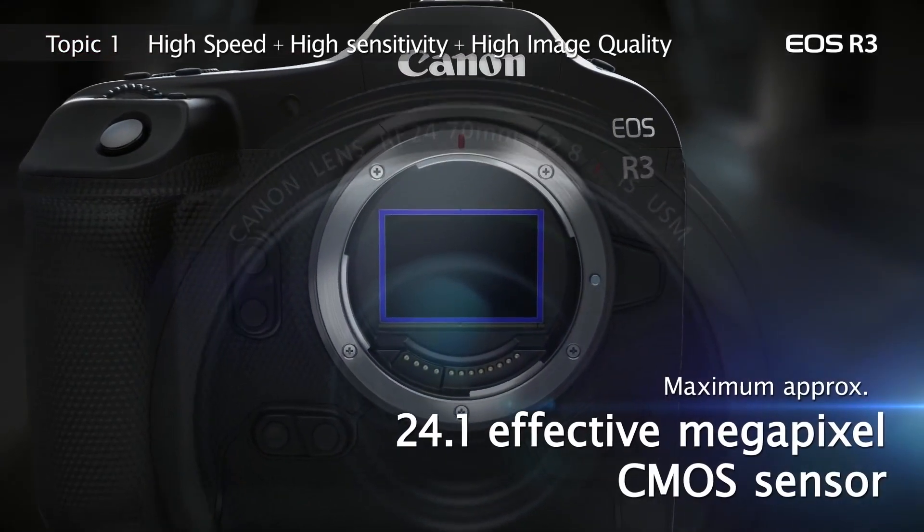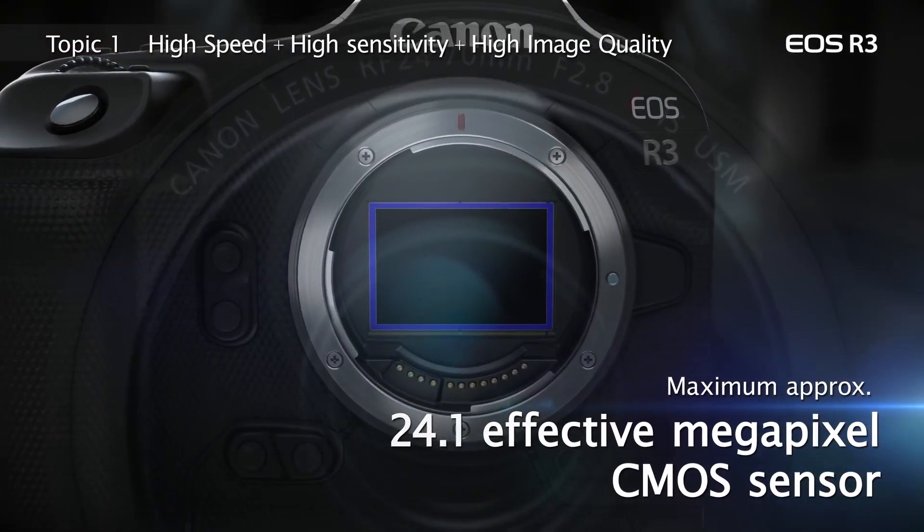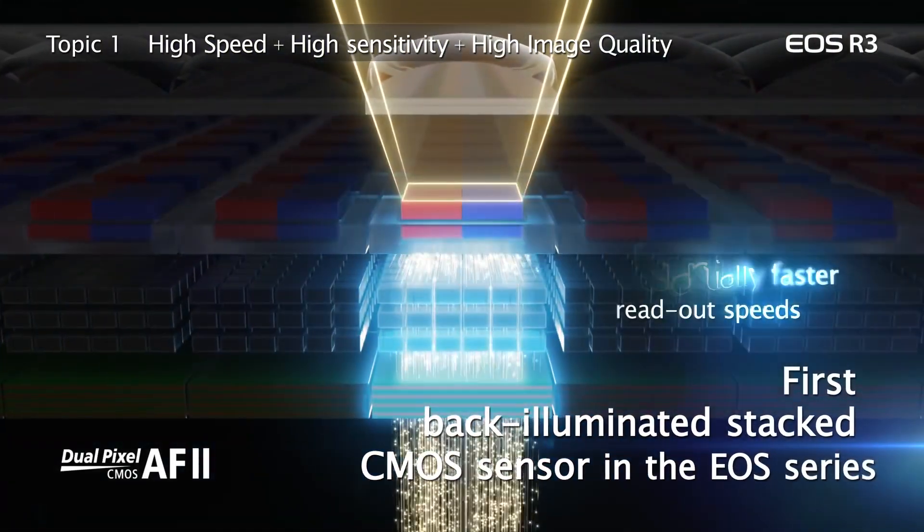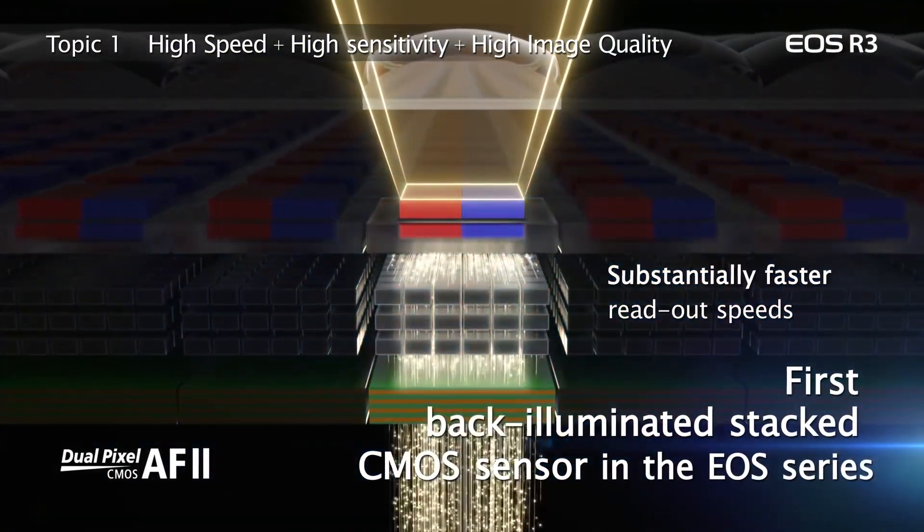The Canon EOS R3 features a BSI CMOS sensor — a back-illuminated stacked sensor. The Canon EOS R series used the first BSI CMOS sensor of its kind. This is a key feature of the sensor design.